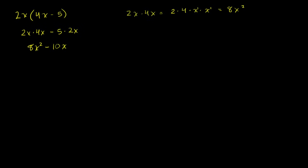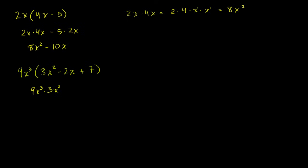Not too bad. Let's do a slightly more involved one. Let's say we had 9x to the third power times 3x squared minus 2x plus 7. Once again, we're just going to do the distributive property — we're going to multiply 9x to the third times each of these terms: 9x³ times 3x², minus 2x times 9x³, and plus 7 times 9x³. The order doesn't matter since we're just multiplying.